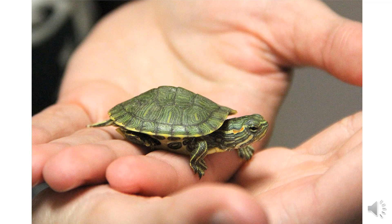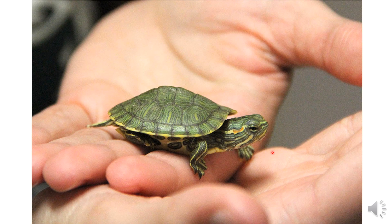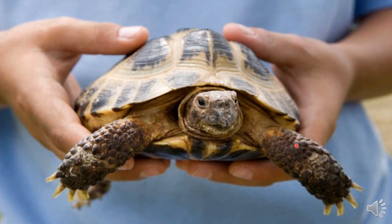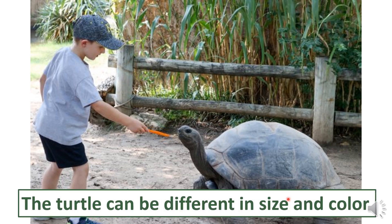Now, look at this animal. Do you remember what this animal is? It has connected scales and it lives on land. So it is the reptile, of course. Let's see the differences among the turtle. This turtle is a little bigger and has a different color — this one is very green, and this one is a paler green. And look at this one, it's bigger and bigger. So did you notice that the turtle can be different in size and color also?